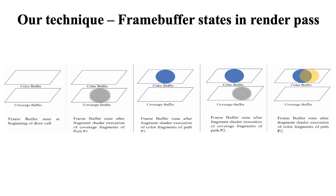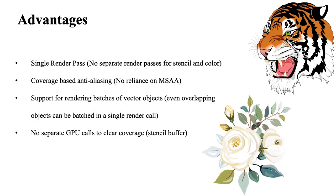This diagram shows how our technique renders two overlapping circles P1 and P2 in a single draw call by executing coverage and color fragments of P1 and P2 in order. Our technique uses a single render pass by utilizing the tile based GPU architecture, without any performance penalties.